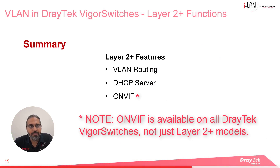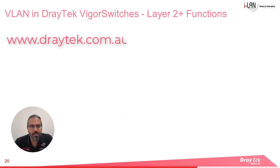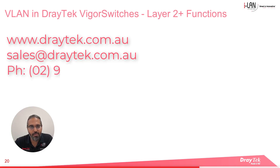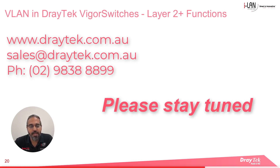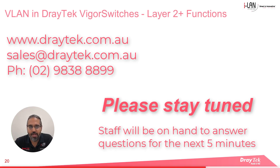To summarize today, we looked at Layer 2 Plus functions in VigorSwitch, which included VLAN routing and DHCP server, as well as the ONVIF feature to monitor and manage video surveillance devices on the network. For more information about DrayTech products, please check out our website at www.draytech.com.au or send us an email to sales@draytech.com.au or give us a call on 0298 3888 999. Don't forget to like and subscribe, and click the bell for notifications of new videos. Thank you for joining today's session. Our technical team will be answering questions in the live chat for the next five minutes.